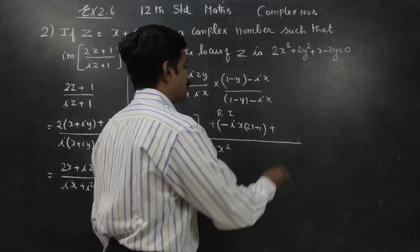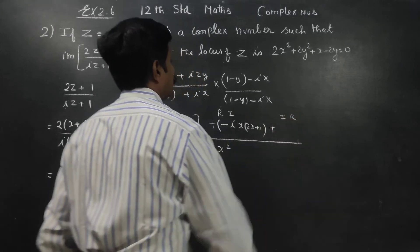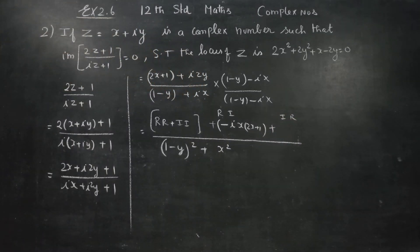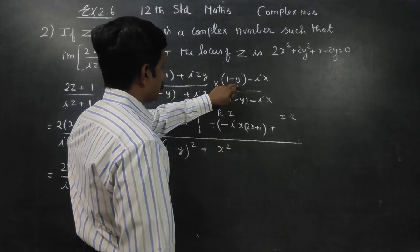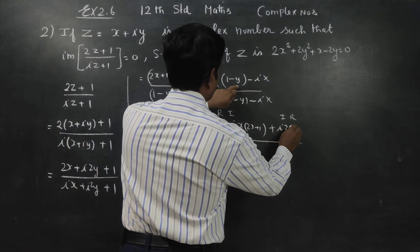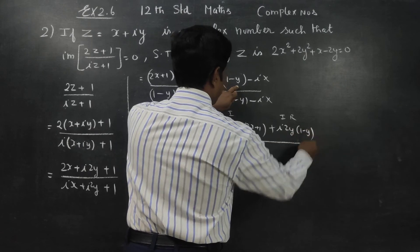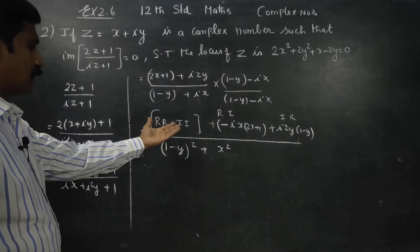Plus imaginary into real. Next imaginary into real multiply. What is our imaginary? i2y into it. i2y into 1 minus y.